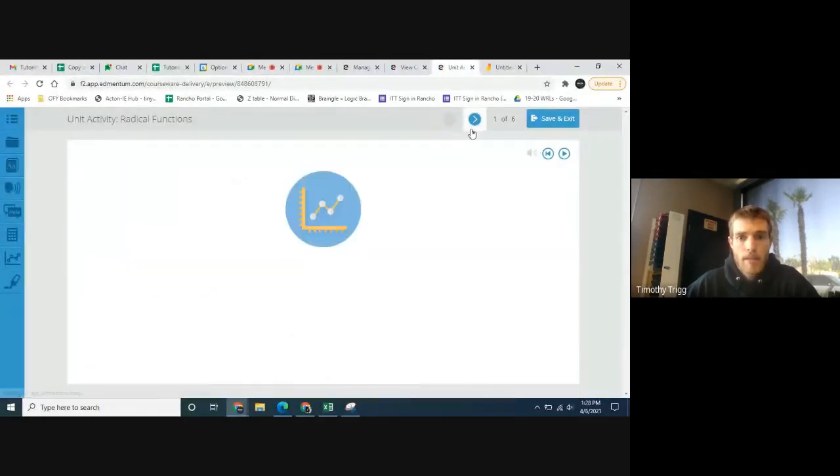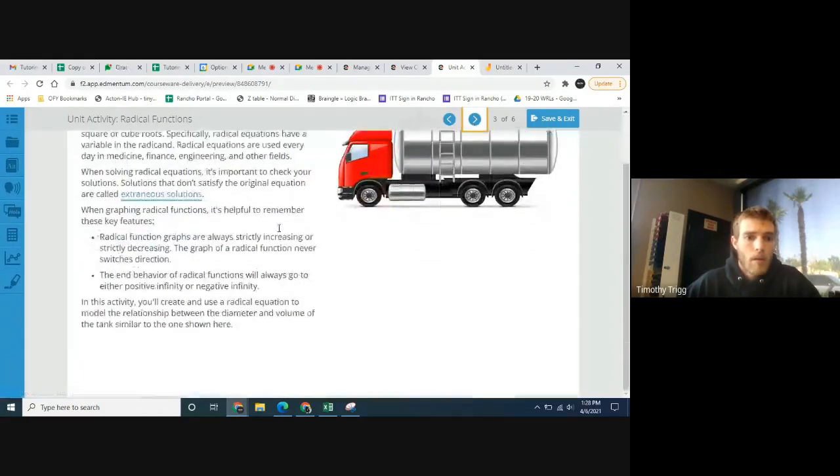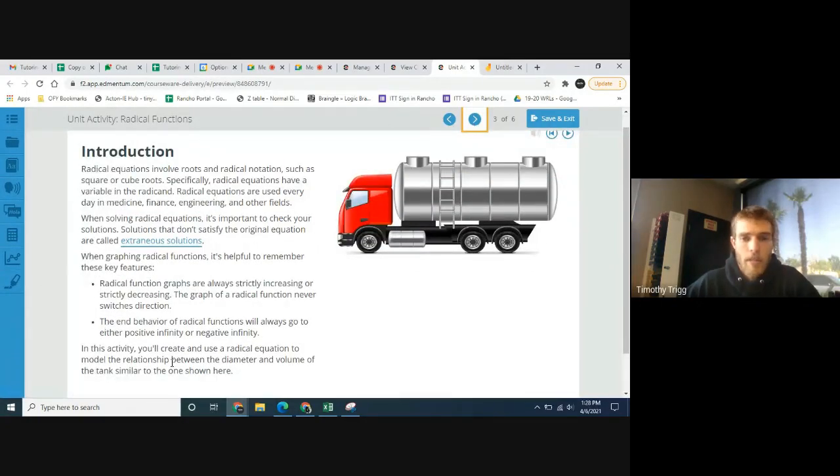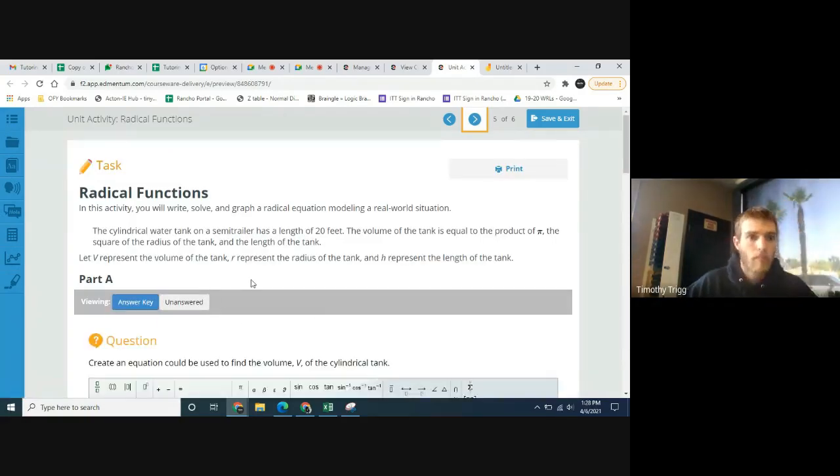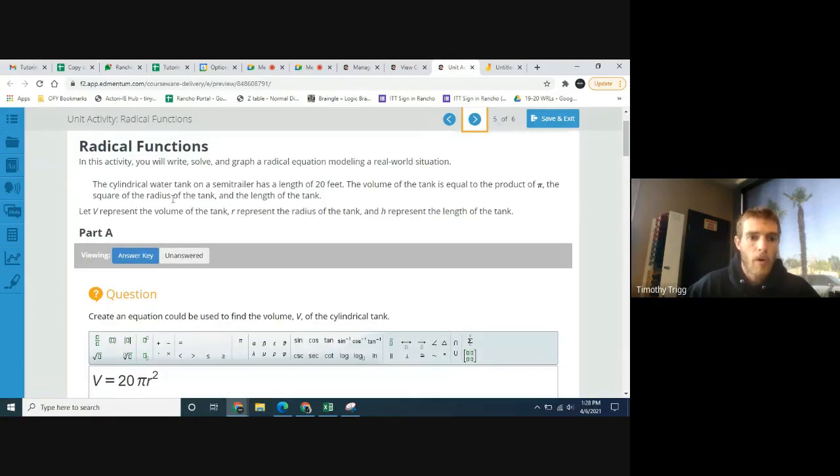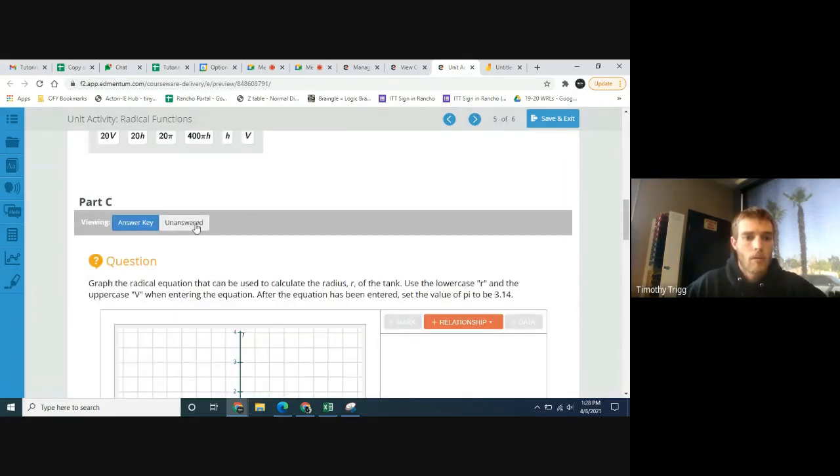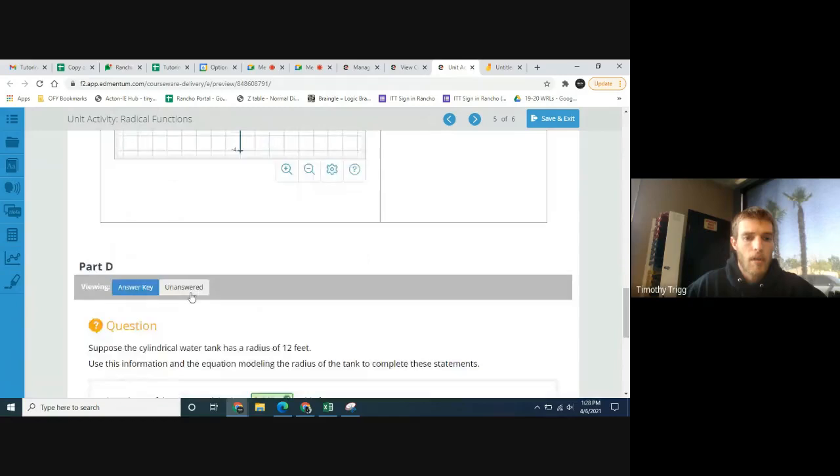Basically this is the activity here on radical functions. The cylindrical water tank on a semi-trailer has a length of 20 feet. The volume of the tank is equal to the product of pi, the square of the radius of the tank, and the length of the tank. Let v represent the volume, r represent the radius, and h represent the length.